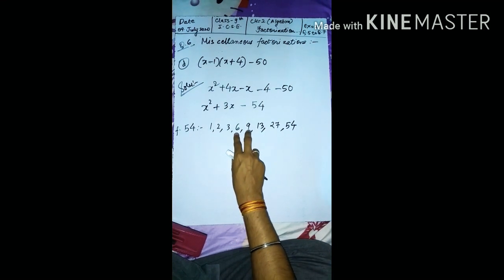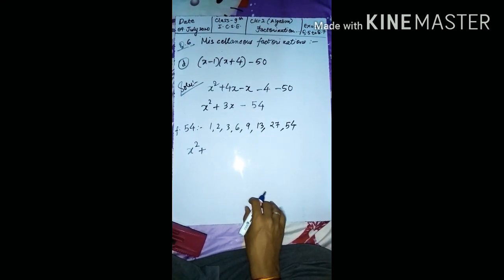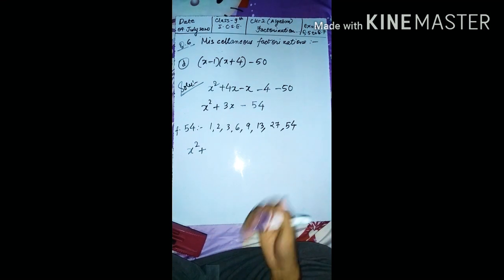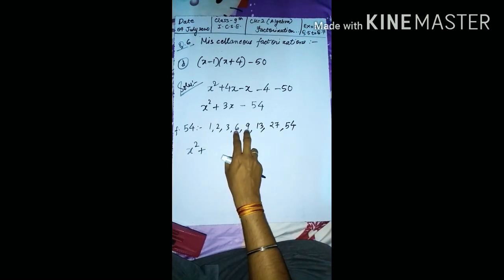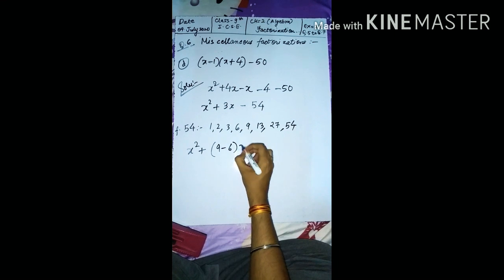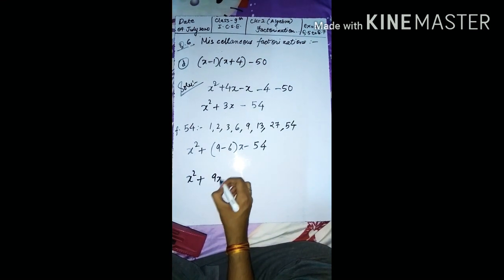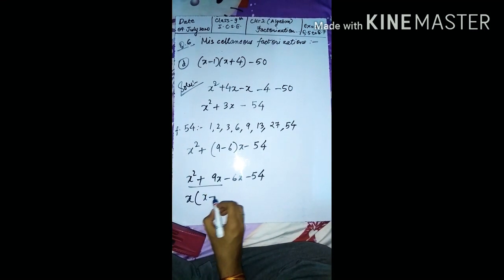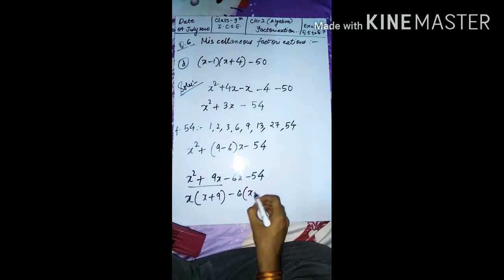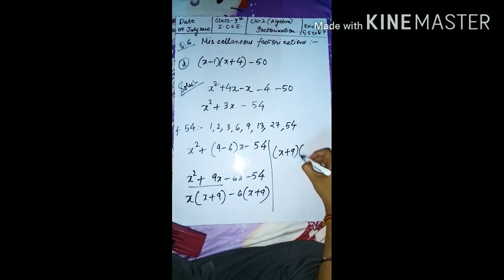You could try 6 − 3 as well but it won't give the correct result, so we use 9 − 6 directly. Writing x² + 9x − 6x − 54, take x common: x(x + 9), take −6 common: −6(x + 9). Then (x + 9) is common, so the final answer is (x + 9)(x − 6).